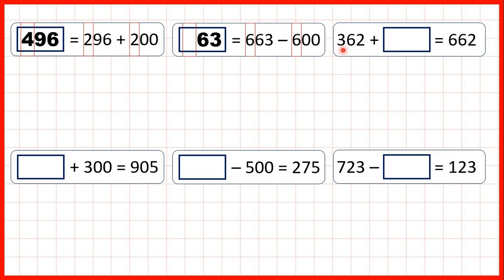Now, 362 plus something equals 662. We can see that the tens and ones digits are the same in our answer, which means we know that we must be adding a multiple of 100.